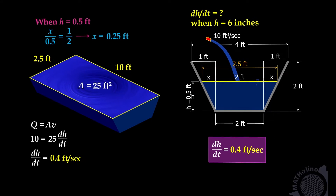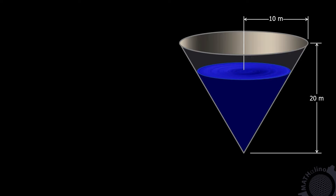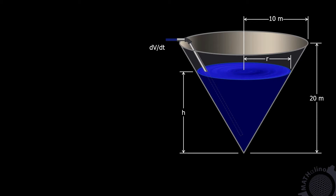In our next example, we have this conical tank. Dimensions: height is 20 meters, radius is 10 meters. The radius of the water surface we call r, and the depth of the water we call h. Water is being pumped out at a constant rate of dV/dt — that is the discharge. When the depth h equals 8 meters, the water is dropping at 17.9 centimeters per minute. The question is: how fast is dV/dt, or what is the discharge of pumping out?